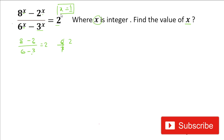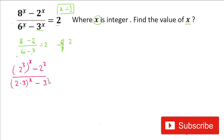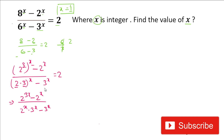Now let's find all solutions. We rewrite 8 as 2³, so the numerator becomes 2^(3x) - 2^x. In the denominator, 6 = 2 × 3, so we have (2·3)^x - 3^x, which expands to 2^x · 3^x - 3^x, all equal to 2.